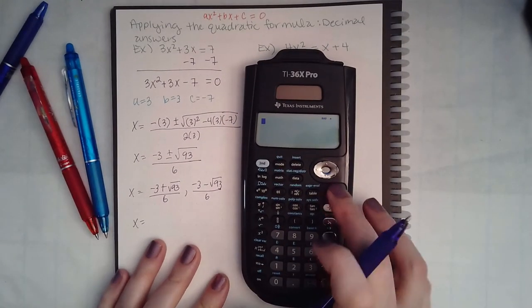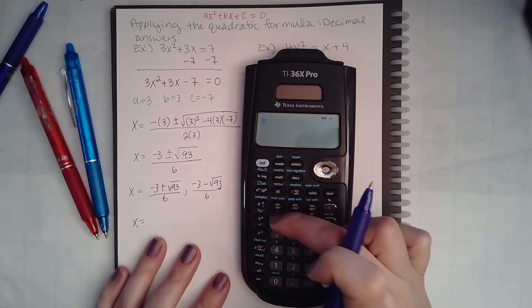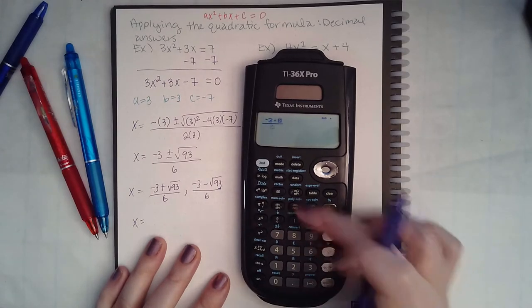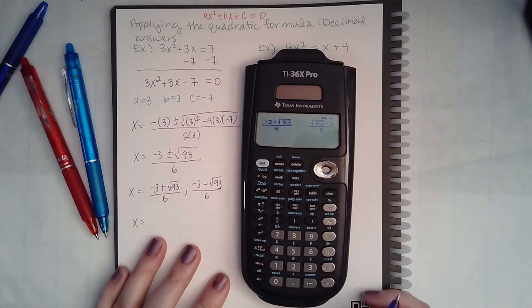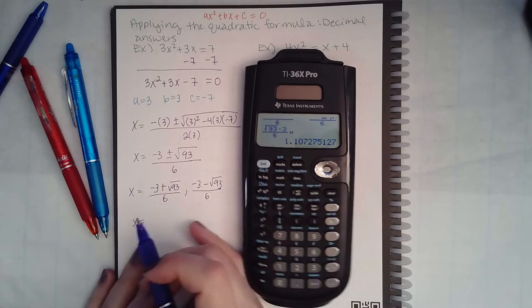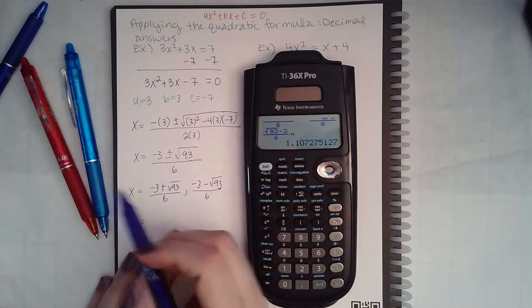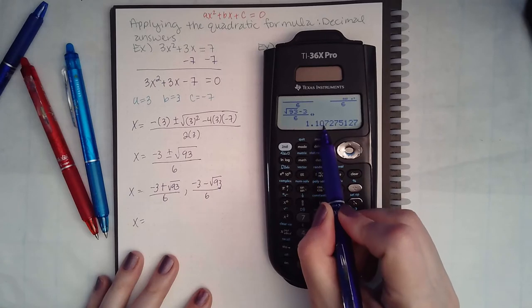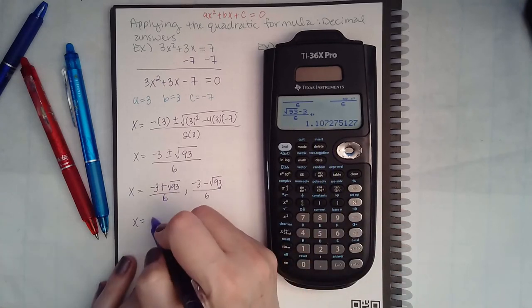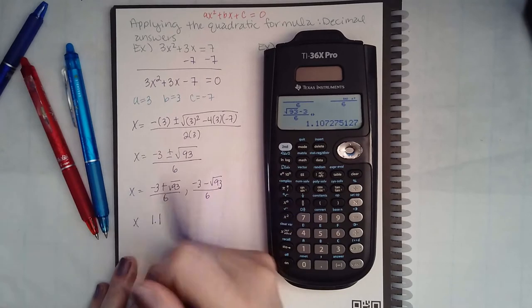I'm going to hit the fraction button first: negative 3 plus square root of 93 over 6, and let's hit the double arrow so that it can give us the decimal value. The directions do say round to the nearest tenth, so make sure you're paying attention. This is approximately 1.1.